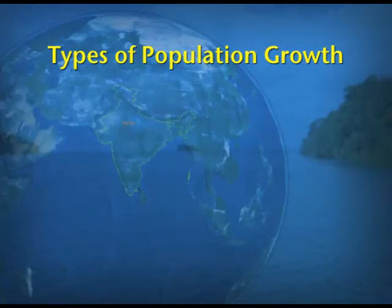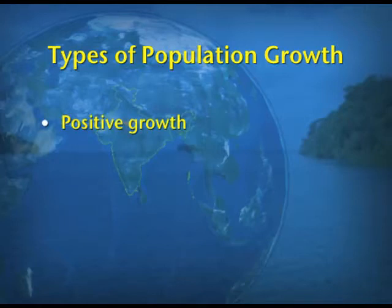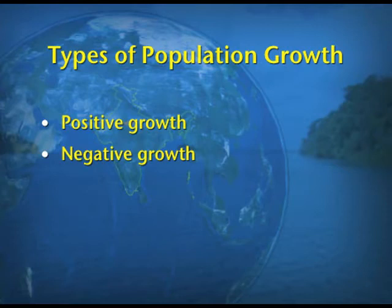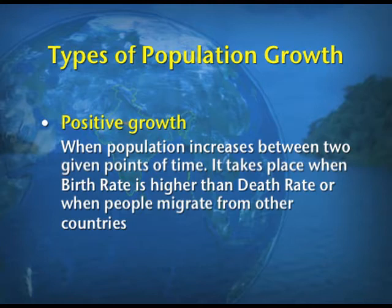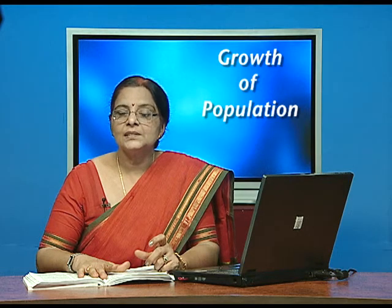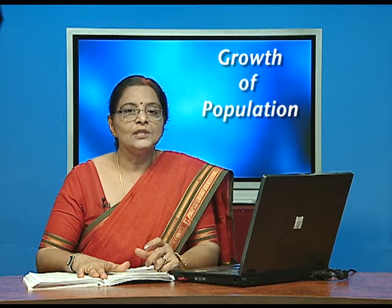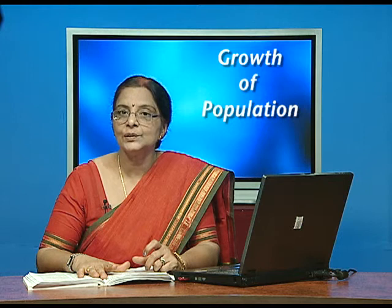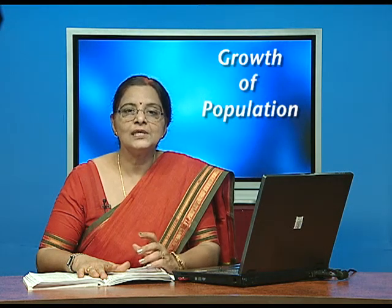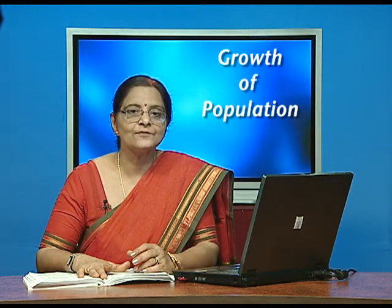There are two types of population growth: positive growth and negative growth. Positive growth is when the population increases between two given points of time. This can be due to a high birth rate and a low death rate, or when people migrate from other countries, which is also responsible for the increase in population — known as positive growth.